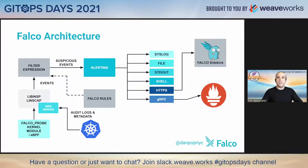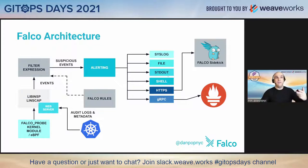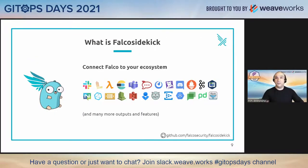In terms of the architecture briefly: we have a kernel module, and then we have libs that filter expressions for suspicious events or alerts, plus rule sets. These can output to things like syslog, file, standard out, shell, HTTPS, or gRPC — which you can connect to something like Prometheus or Falco Sidekick. Falco Sidekick is community-contributed and connects Falco to any part of your ecosystem, like Flux, Lambda, or any level of functions. It's a sidecar that runs, and I'm going to demonstrate that.